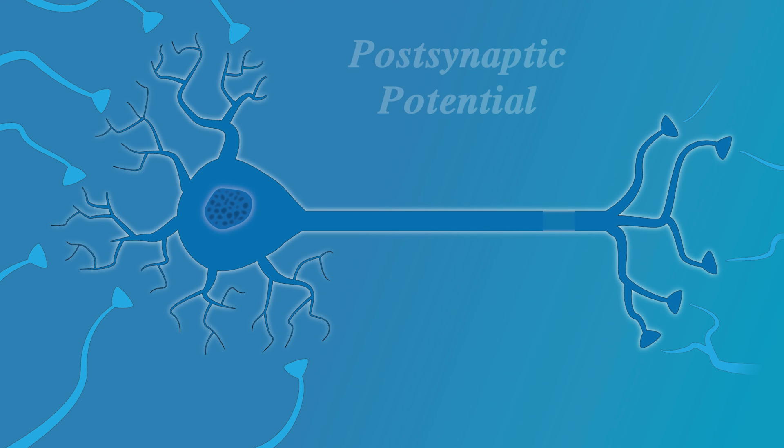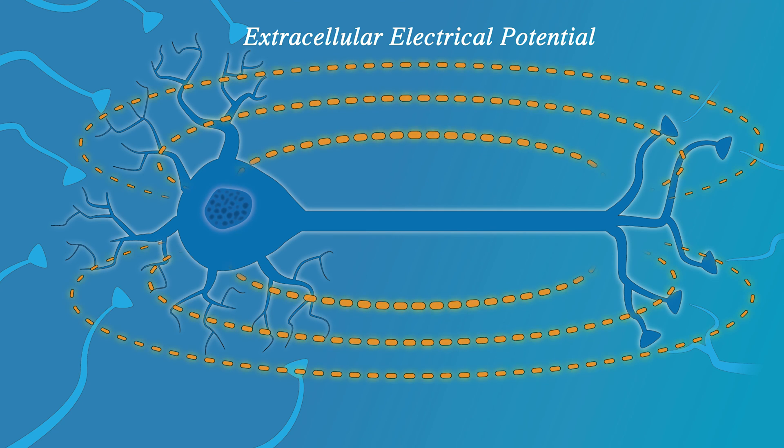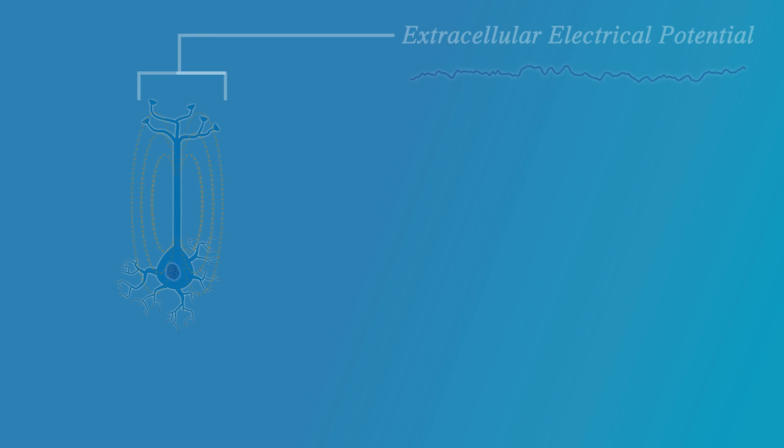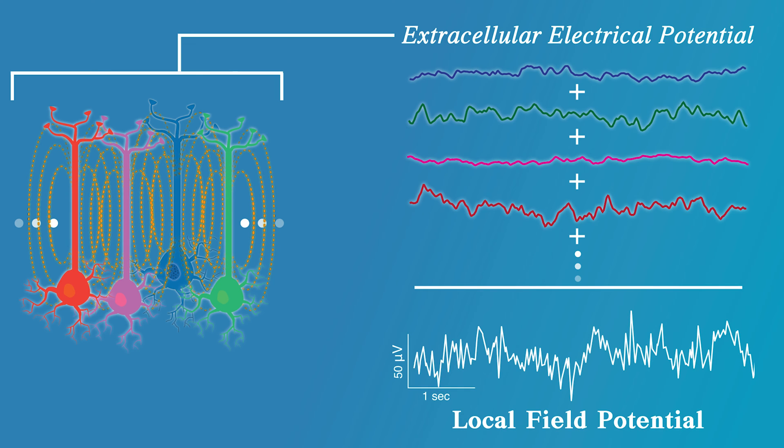This is called the postsynaptic potential and it generates an extracellular electrical potential around a neuron. Around an individual neuron, the extracellular potential is extremely small. However, summing the synchronous activity of thousands or millions of similarly oriented neurons within an area of the brain creates a measurable signal called the local field potential.